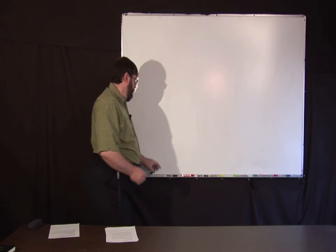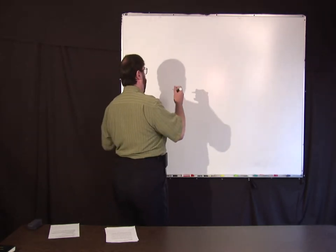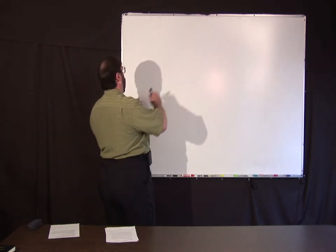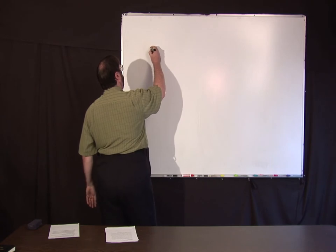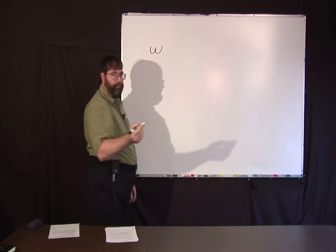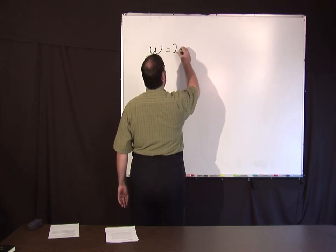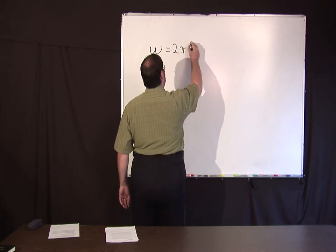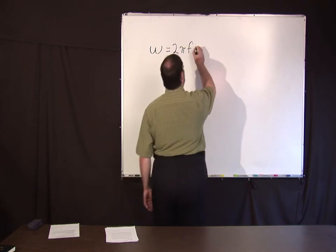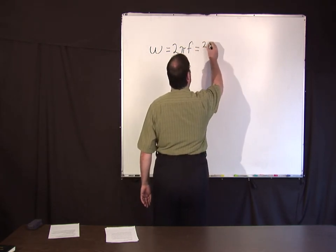Okay, to review what we did last week: we already know that for periodic phenomena we have the relationship where the angular frequency is equal to 2 pi times the frequency, which is equal to 2 pi over the period.